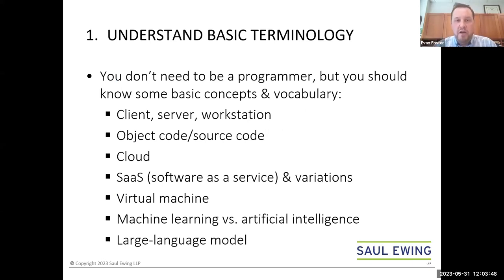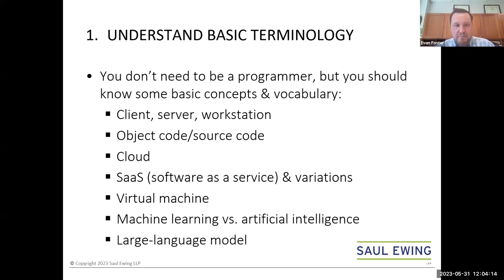To kick things off, when dealing with any kind of technology contracting — be it software, hardware, IT services, or AI or machine learning — you need to understand some basic terminology. While you certainly don't need to be a programmer or a tech geek, there are certainly some basic concepts and vocabulary you should be familiar with. Client, server, and workstations are terms that refer to various places where software may be installed or utilized from, and understanding those helps you understand the licensing model.